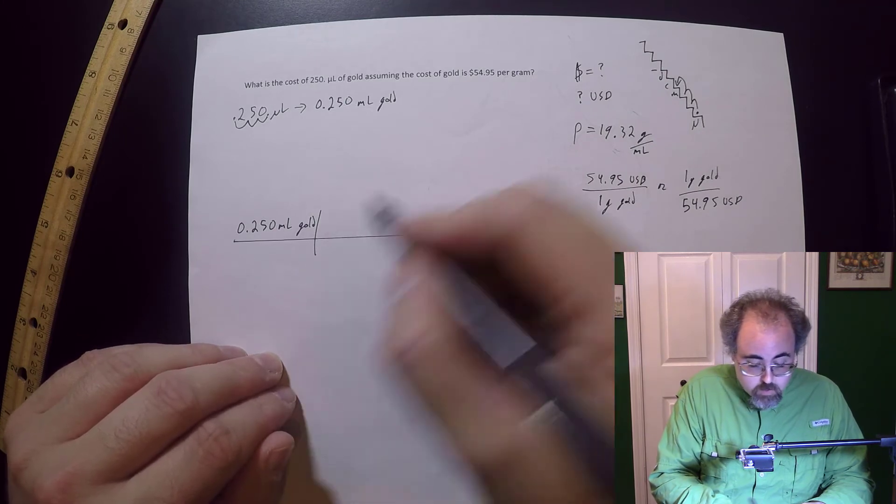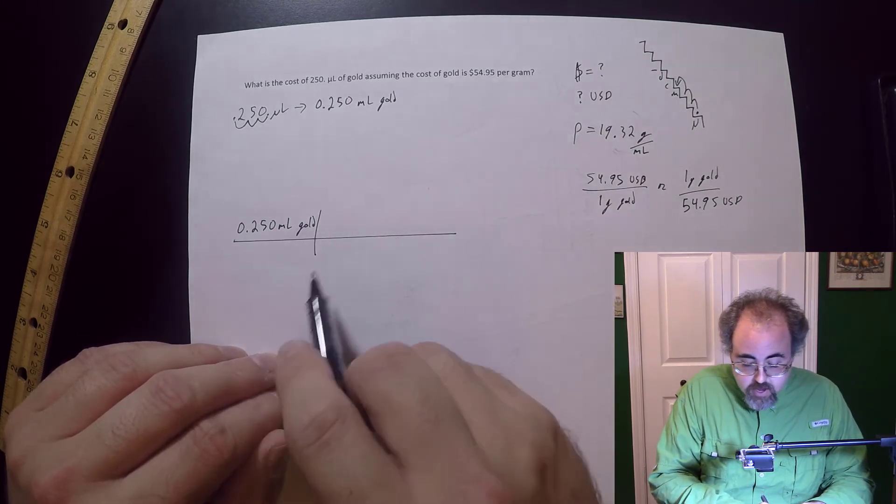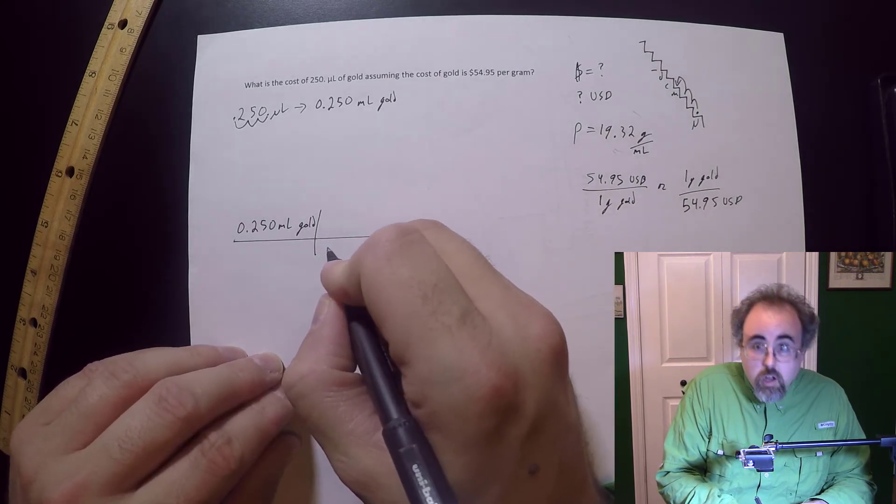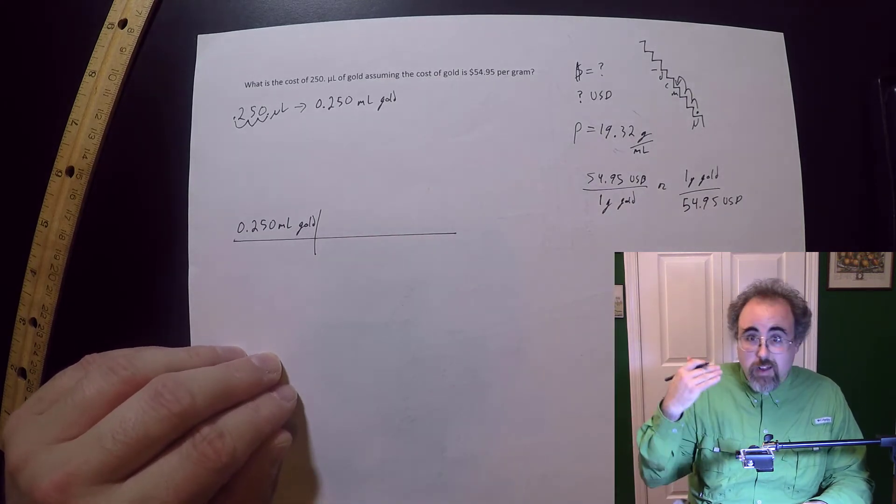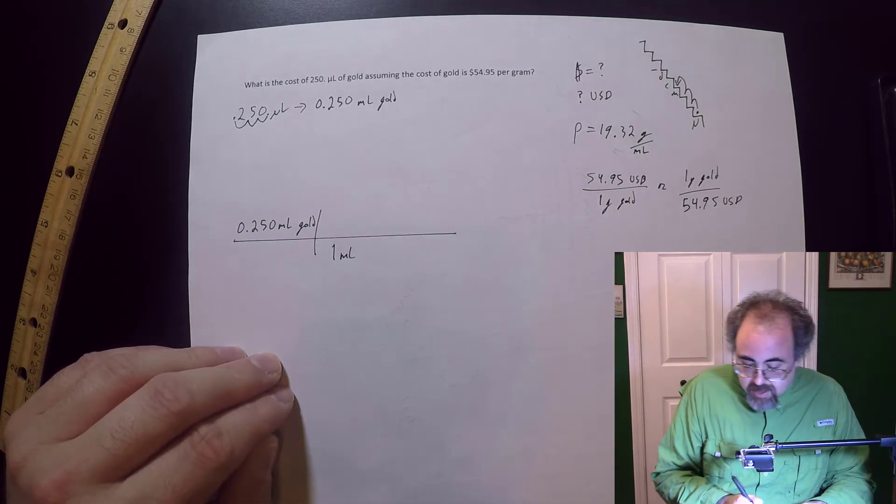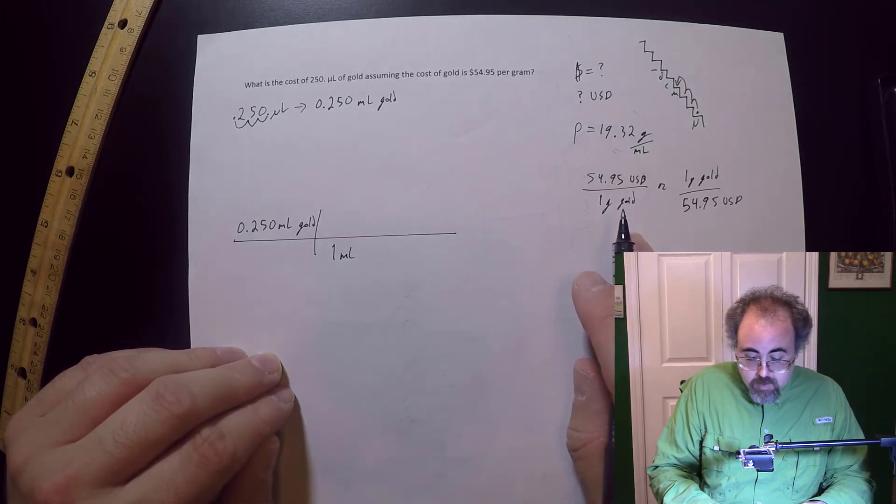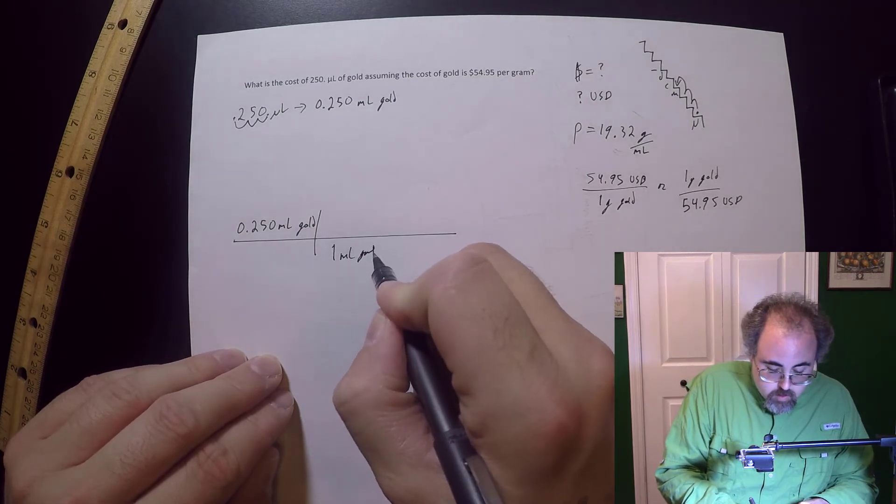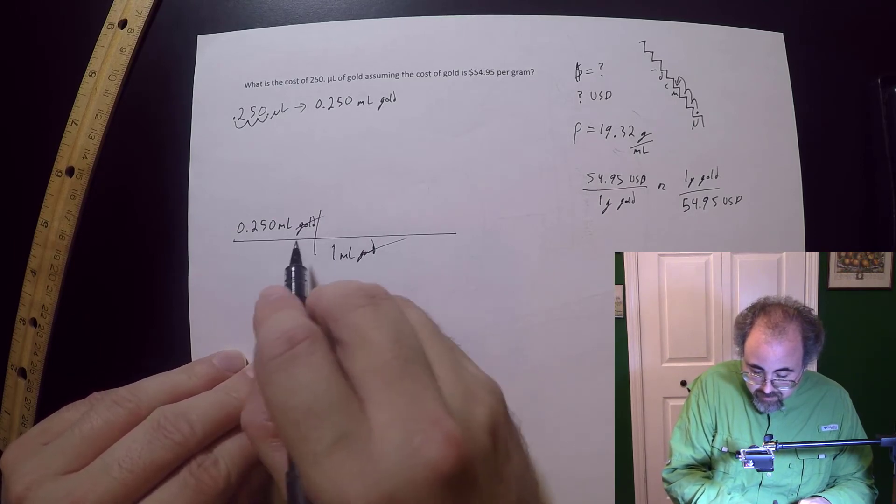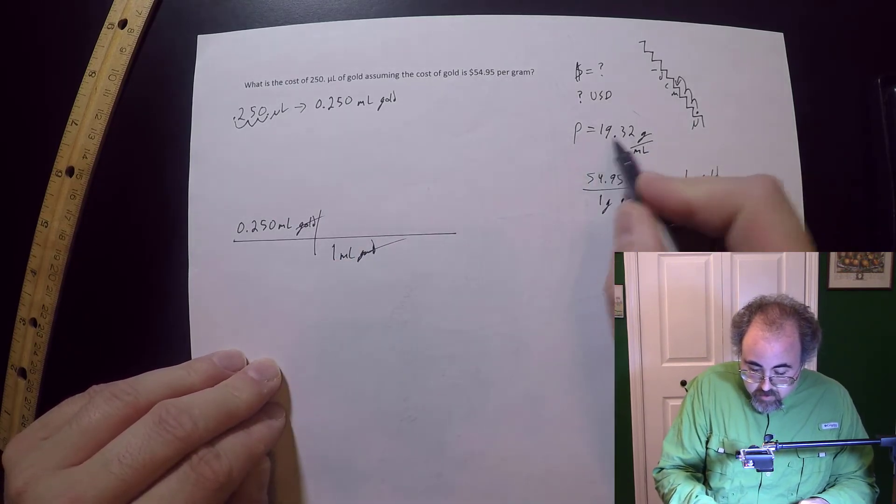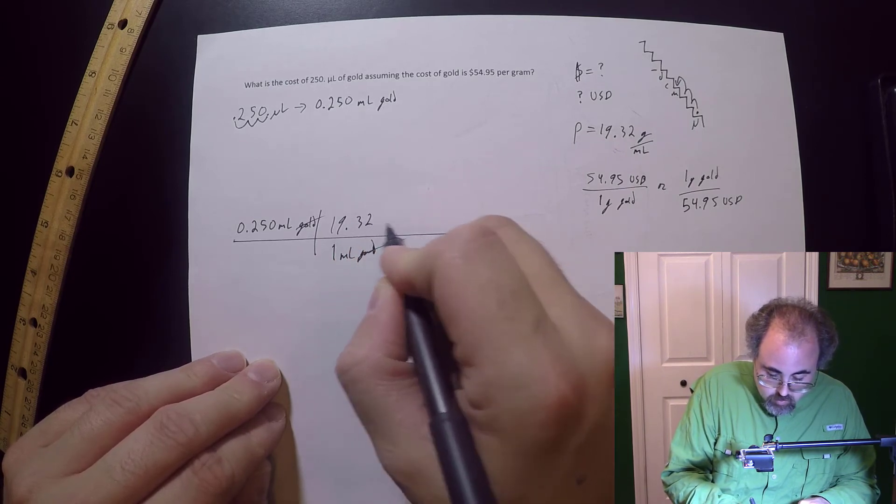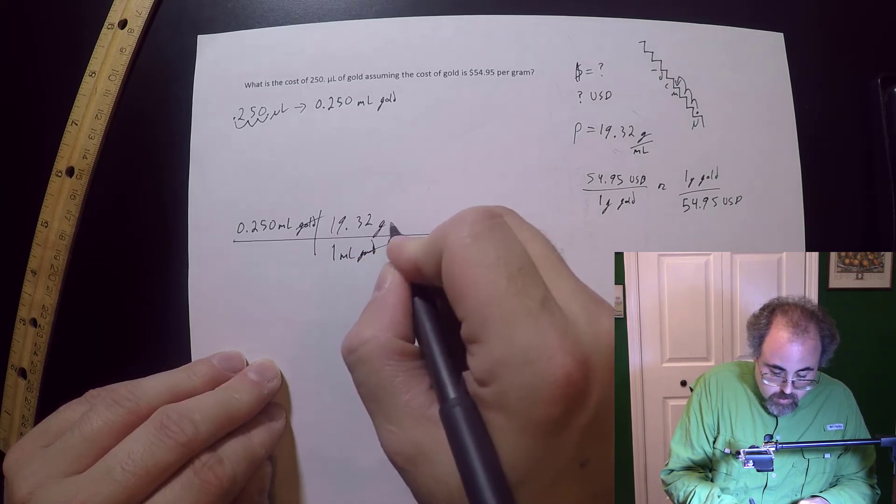Okay. So what I'm going to do is I'm going to go for this guy. I've got milliliters. So I need milliliters on bottom because it's what I want by what I got. What I got is milliliters. So I'm going to go one milliliter on the bottom and it's going to be one milliliter gold. I know that does not look like gold, but that's supposed to be gold.